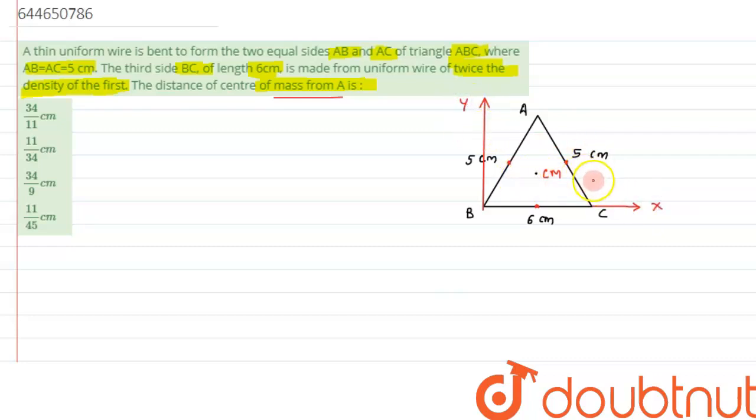So first we will mark the coordinates of all the points and then accordingly we will by using the formula of center of mass we will try to calculate its value. So for wire AB and AC as we can see for AB center of mass will lie on the center. So we have just put a dot over here and similarly these three dots are showing the center of mass of each wire. Now we have to find its coordinate first and then we will apply the formula.